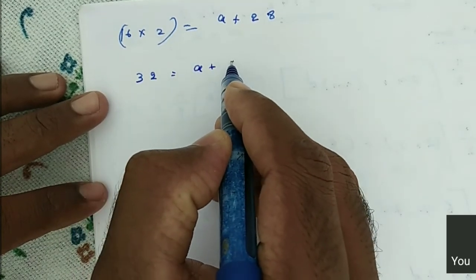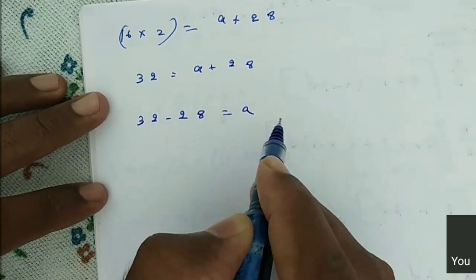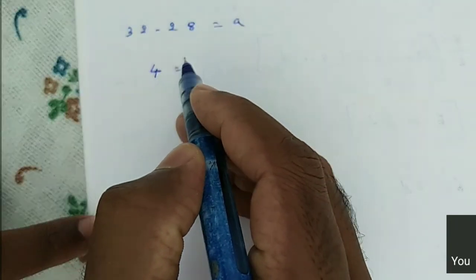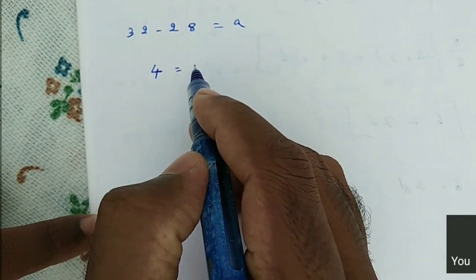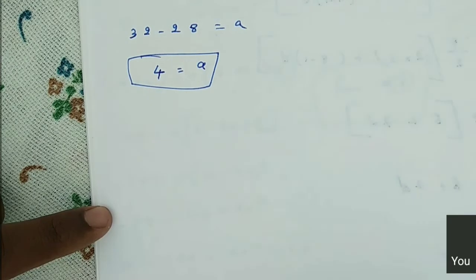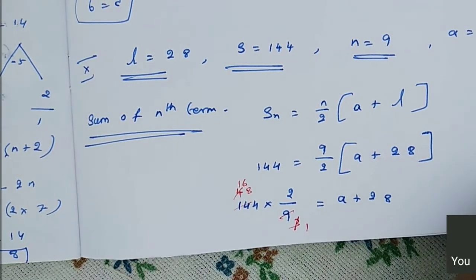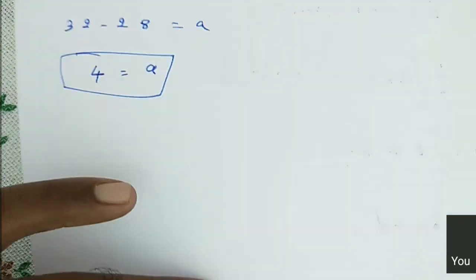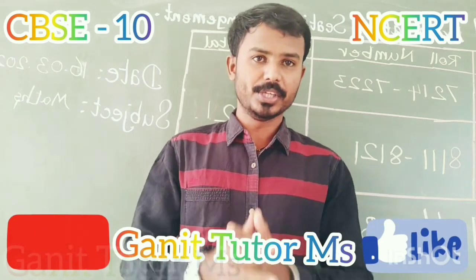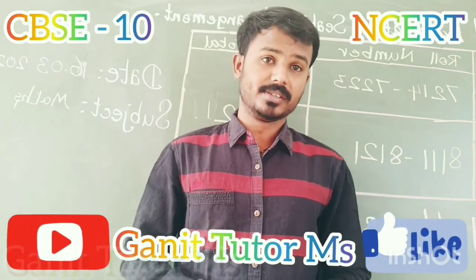32 is equal to A plus 28. Then 32 minus 28 equals A, so A is equal to 4. They were asking only A, and we found out A. Do you have any doubts? You can ask me in the comments. Thank you.